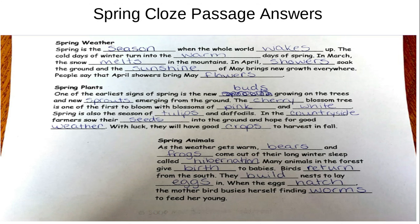Spring plants. One of the earliest signs of spring is the new buds growing on the trees, and new sprouts emerging from the ground. The cherry blossom tree is one of the first to bloom, with blossoms of pink and white. Spring is also the season of tulips and daffodils. In the countryside, farmers sow their seeds into the ground and hope for good weather. With luck, they will have good crops to harvest in fall.